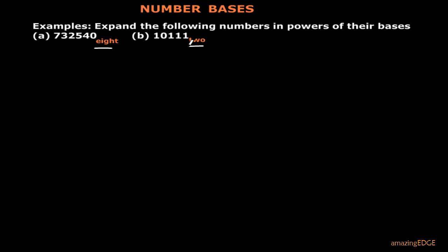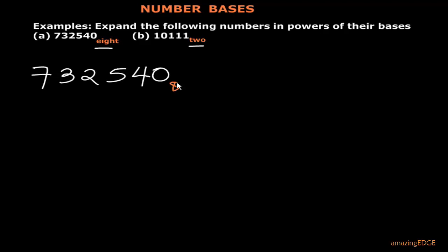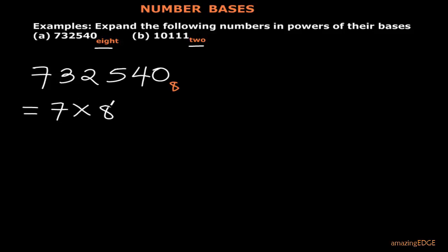Here we have the number 7, 3, 2, 5, 4, 0 and this one is in base 8. Remember, you can either write it in figures or in words. We want to do the expansion. The key issue is to look at the place values that will guide us on the powers we assign to that base. Let's begin the expansion: here we have 7, and since we are dealing with base 8, we have 7 times 8. We need to assign a power to this 8 — let's continue first and then find a systematic way of assigning those powers.